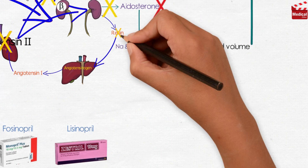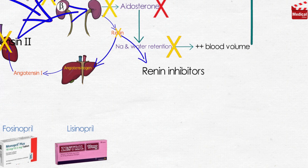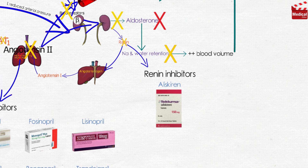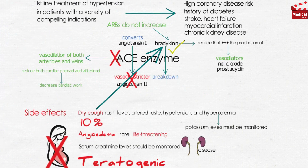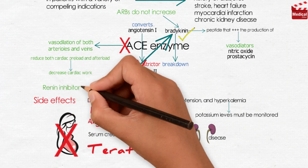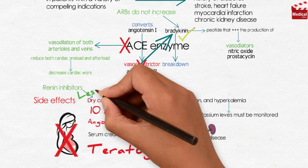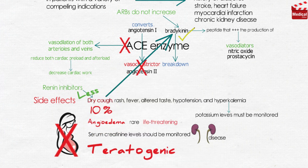The third category is the renin inhibitors, such as aliskiren. It directly inhibits renin and lowers blood pressure about as effectively as ARBs and ACE inhibitors. It should not be combined with an ACE inhibitor or ARBs. Aliskiren can cause diarrhea, especially at high doses, and can also cause cough and angioedema, but probably less often than ACE inhibitors. As with ACE inhibitors and ARBs, aliskiren should not be used during pregnancy.